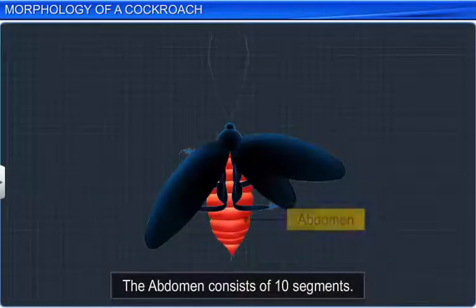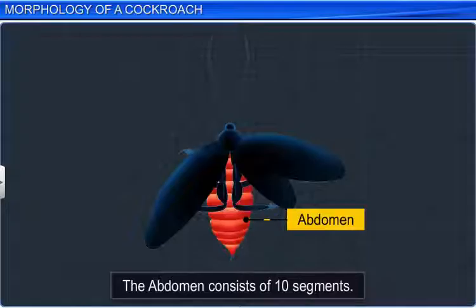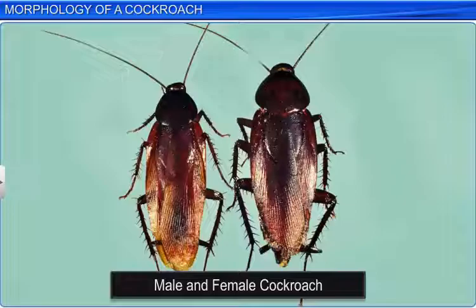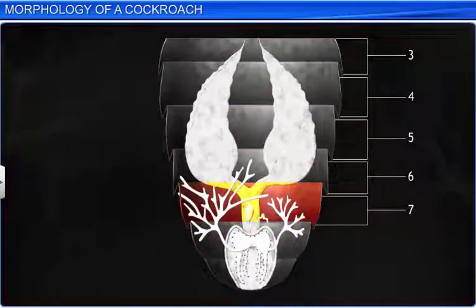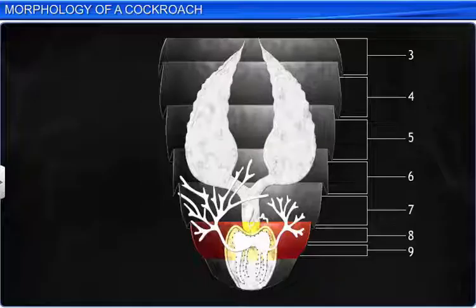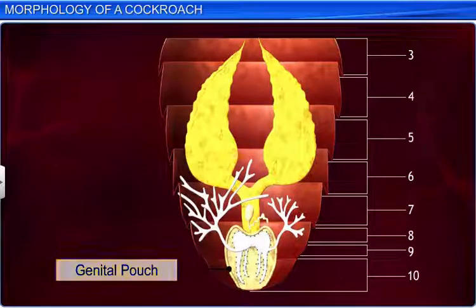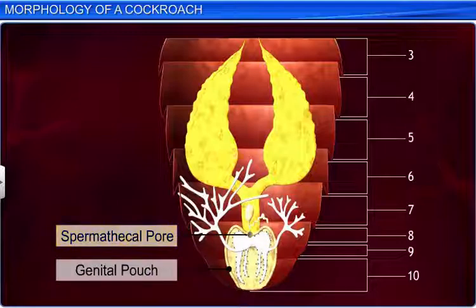Following the thorax is the abdomen, which consists of ten segments. Although the male and female cockroaches have an equal number of abdominal segments, the female's abdomen is broader than that of the male. In females, the seventh sternum is boat-shaped, and together with the eighth and ninth sterna, forms a genital pouch, which contains the female gonopore, spermatical pores, and collateral glands.